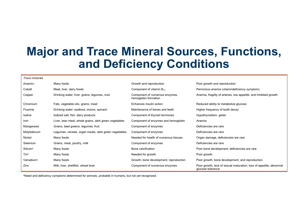Here are trace mineral sources and functions — I find these really interesting, but do not memorize these. Every so often, if people are deficient, these will pop up. For example, if you're deficient in iron, people can have anemia — this is one of the more common deficiencies we see. People used to be really deficient in iodine, but then they started iodizing salt, and that helped address that deficiency.